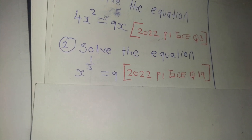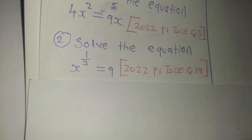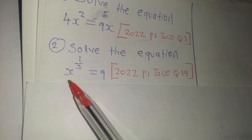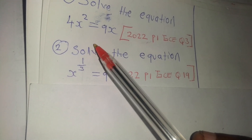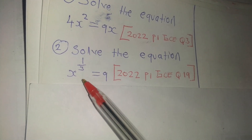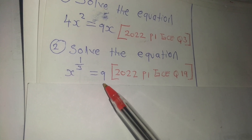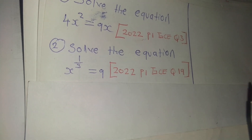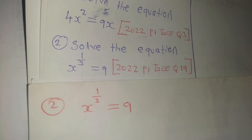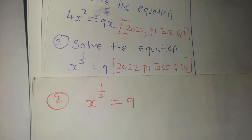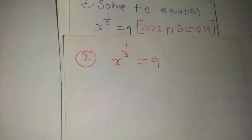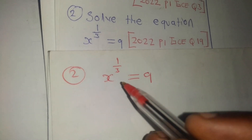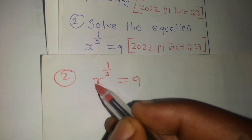Now we are going to solve the second question. The equation is x to the power of one third equals 9. There are certain things you have to understand about this type of equation.